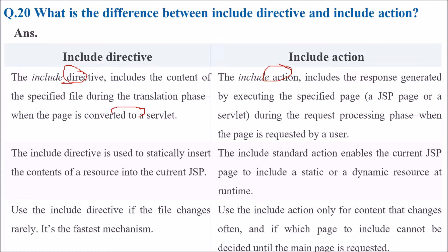The include directive is used to statically insert the contents of the resource in the current JSP. The include standard action enables the current JSP page to include a static or dynamic resource at runtime. Use the include directive if the file rarely changes — this is the fastest mechanism. Use the include action only for content that changes often, or if which page to include cannot be decided until the main page is requested.